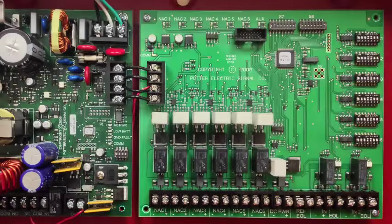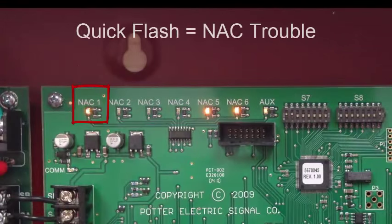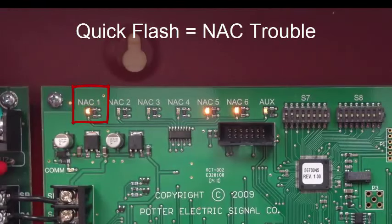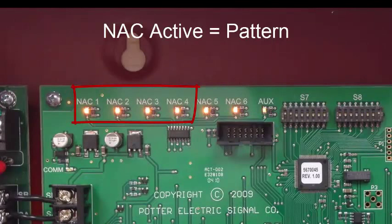Each NAC output has an indicator LED located at the top of the board. The LED will flash quickly when there is a trouble condition such as an end-align missing, end-align shorted, or current limit condition. When the NAC is active, the LED outputs the same pattern as the NAC output. So for example, when NAC1 is programmed as Gentex sync, when the NAC is active, the LED of NAC1 flashes in a Gentex sync pattern.